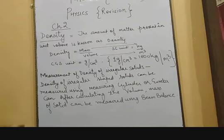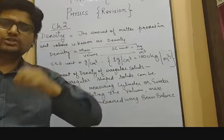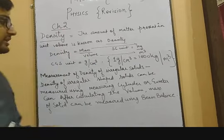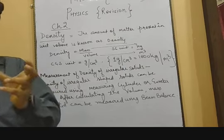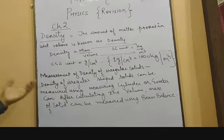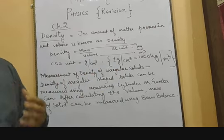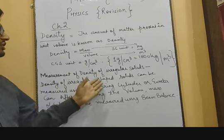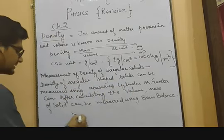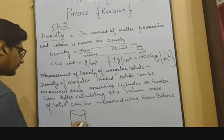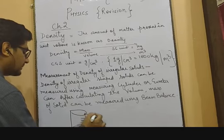For measuring density of regular solids — those whose shape and size are fixed — you can measure the mass and calculate volume using the volume formula. But for irregular solids, whose volume cannot be calculated by formula, density can be measured using a measuring cylinder or a eureka can. A measuring cylinder is a cylinder with measurements from 0 ml to 100 ml or 1000 ml, depending on its size.